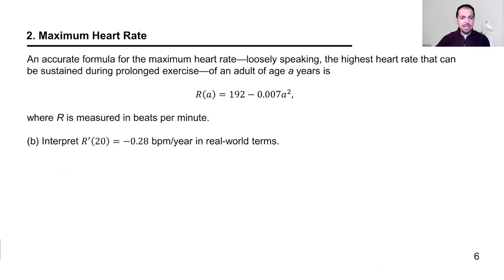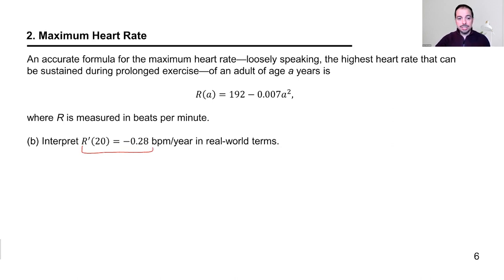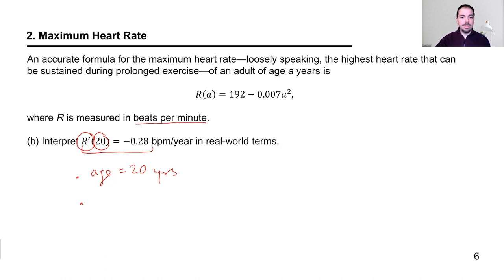Now let's interpret this statement. We're talking about an adult of age 20. So we're thinking about the change in beats per minute that this adult's maximum heart rate will experience as their age changes. Notice that the derivative is negative.